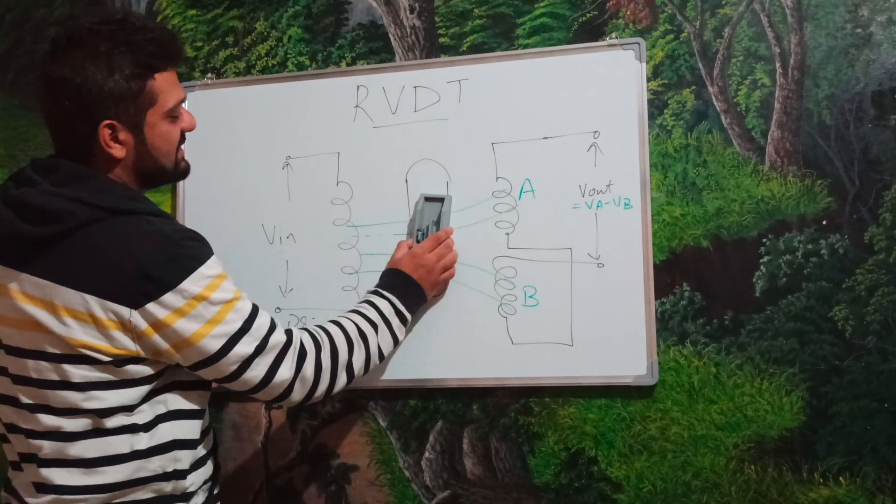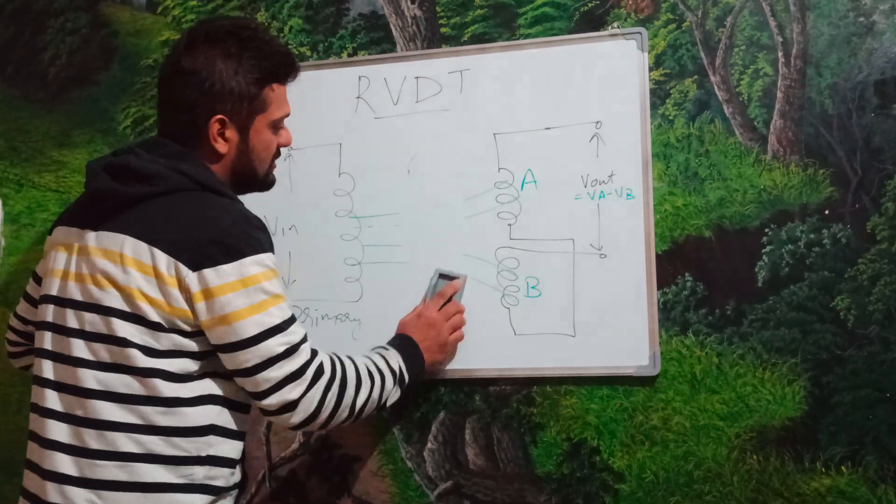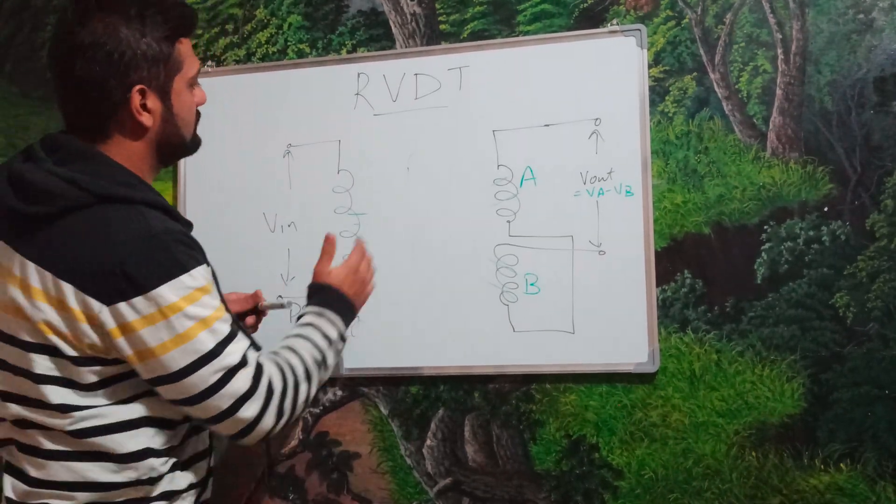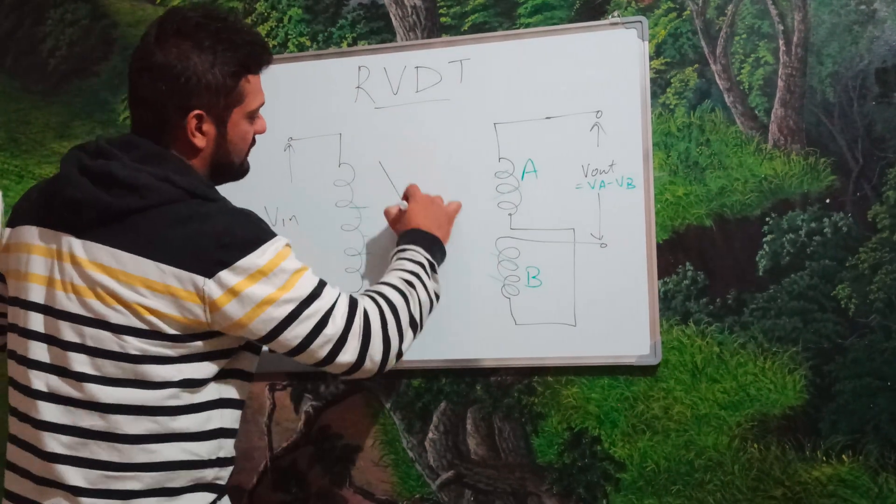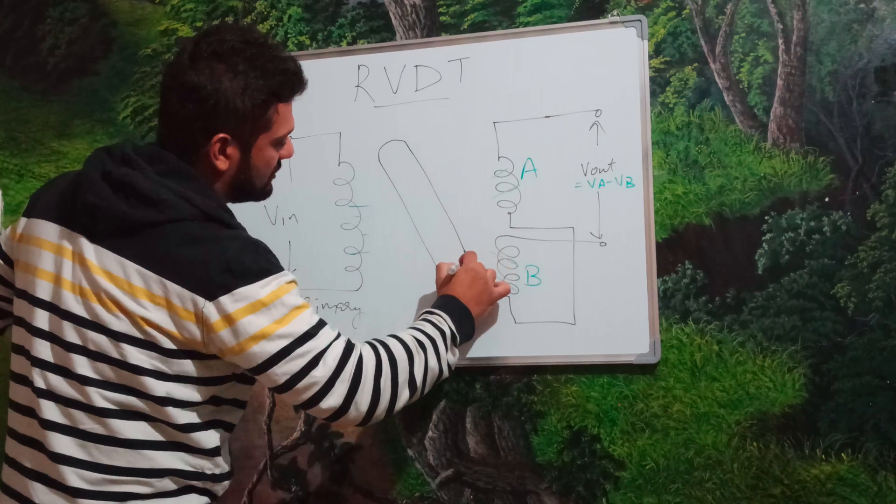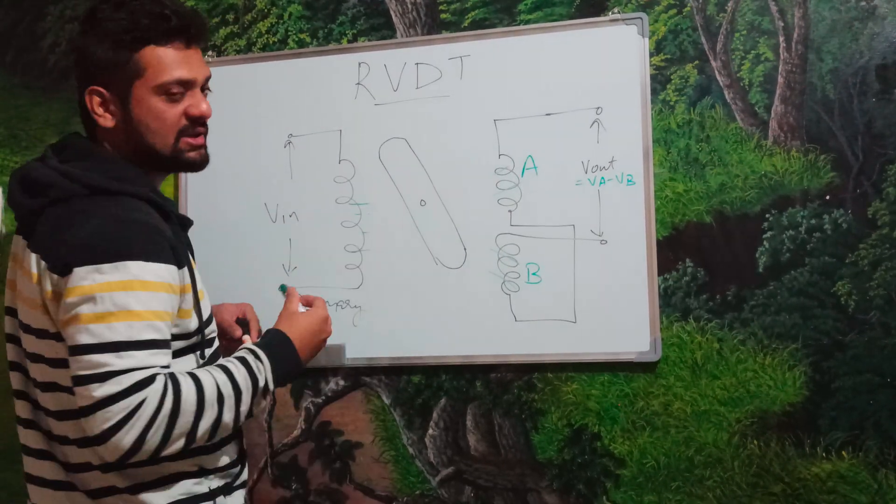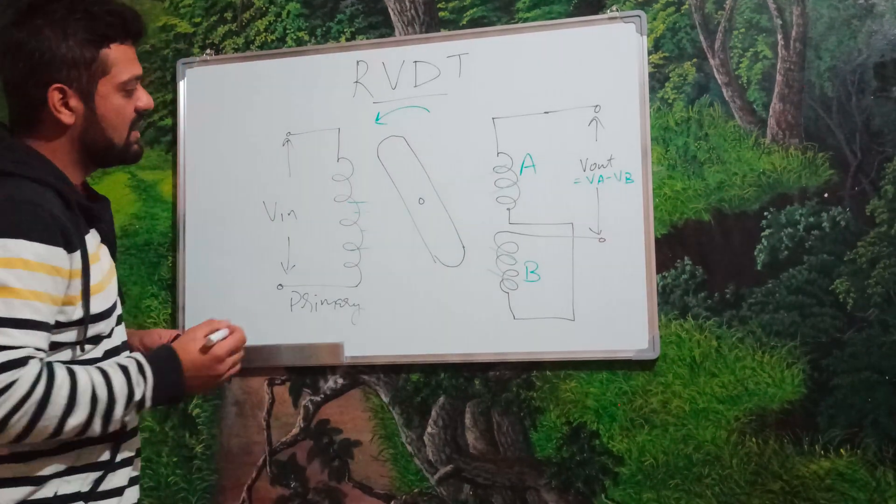If we go about shifting this cam in an anti-clockwise direction, let me redraw this to make it clear. Now, if we place this a bit inclined in anti-clockwise direction, that is, I have shifted this cam which was earlier in a neutral position in an anti-clockwise direction.